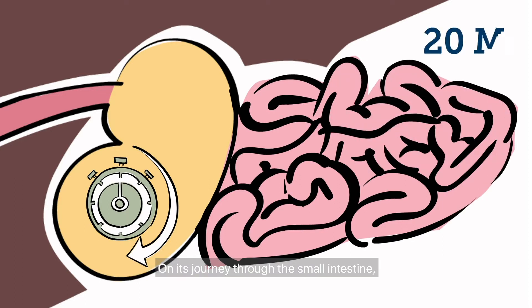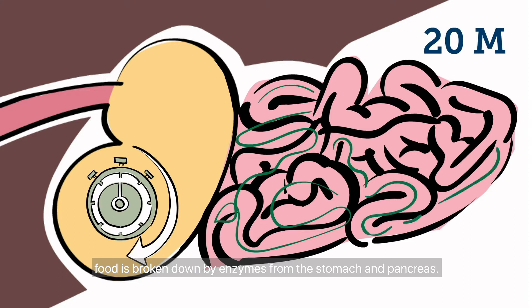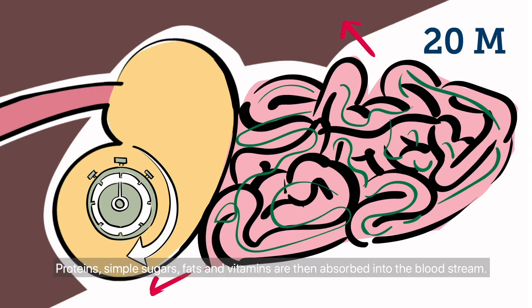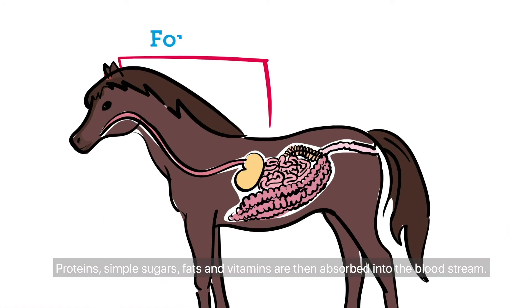On its journey through the small intestine, food is broken down by enzymes from the stomach and pancreas. Proteins, simple sugars, fats and vitamins are then absorbed into the bloodstream.